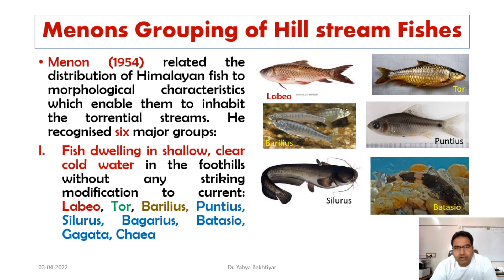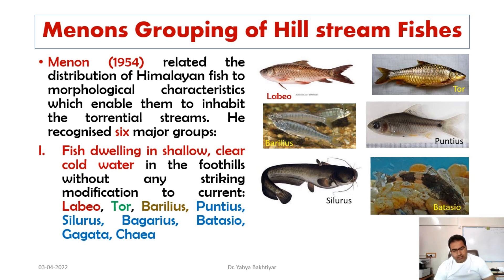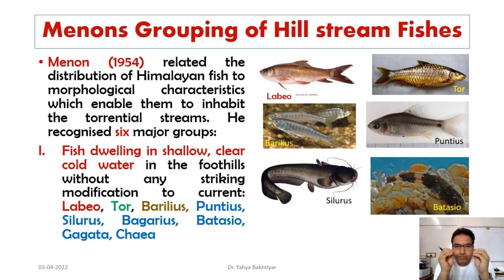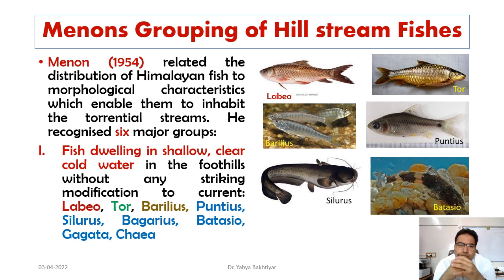Menon worked particularly on the fishes of hillstreams — specifically Himalayan hillstreams. In 1954, he related the distribution of Himalayan fish to the morphological characteristics which enabled them to inhabit the torrential streams. Based on the morphology of fishes, he divided them into six groups.